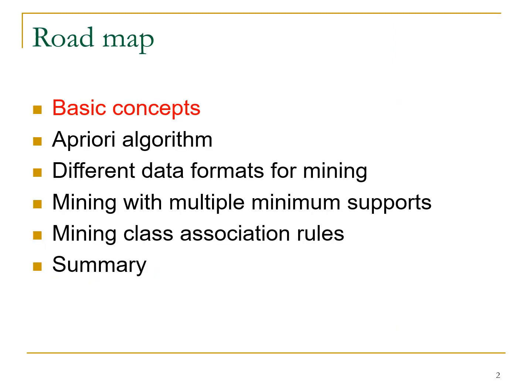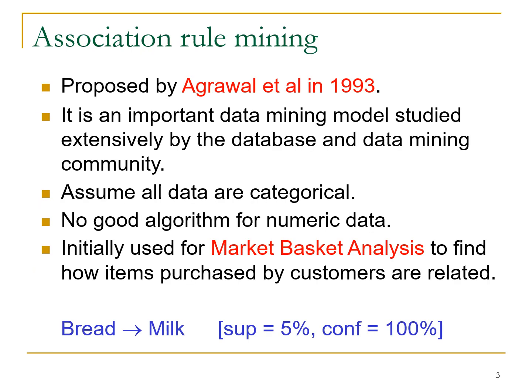Here is a roadmap: we are going to cover basic concepts, the importance of every algorithm, different data formats of mining, mining with multiple minimum supports, mining class association rules, and finally a summary. Association rule mining was proposed by Agarwal in the year 1993. It is an important data mining model studied extensively by the database and data mining community. It assumes all data are categorical — it is not a good algorithm for numerical data.